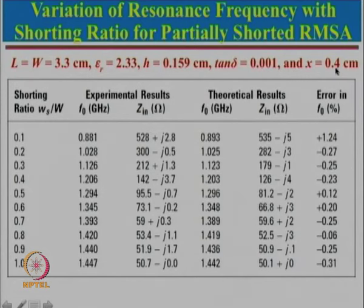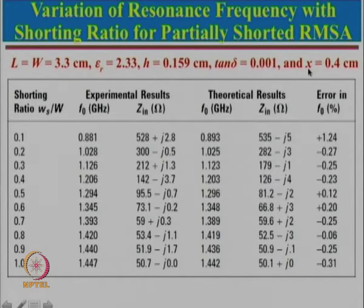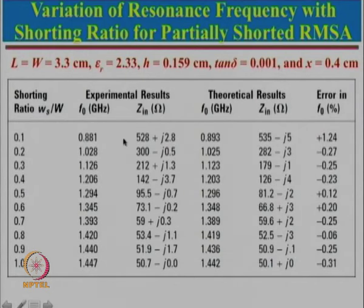Let us see what happens to the impedance. For x equal to 0.4, for fully shorted width we can get approximately matching with 50 ohm — values of 52, 53, even 59 are reasonably good. But the impedance increases very significantly as shorting is reduced. This does not mean we cannot do impedance matching for those cases. Since impedance is higher, we need to shift x towards the shorted point, because along the shorted edge impedance is 0. By changing x from 0.4 to 0.3 or 0.2 or closer to 0.1, we can obtain matching for any shorting ratio. Just by changing the feed point location we can obtain matching for any of these shorting ratios.